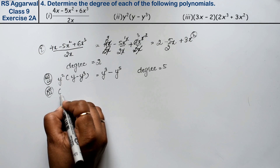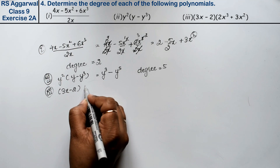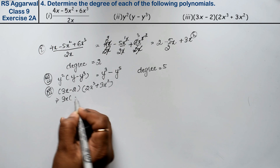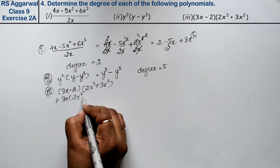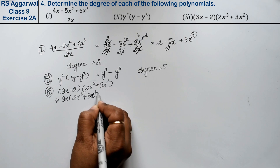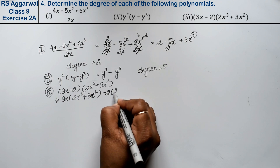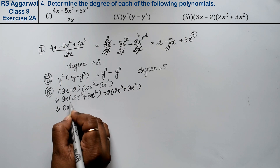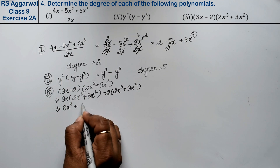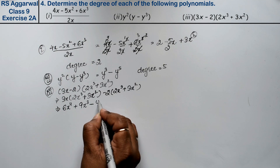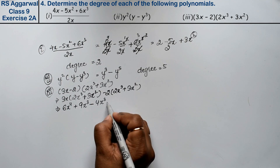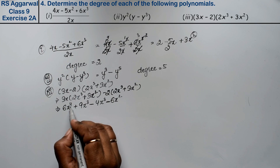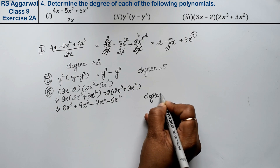Let's do the third part. Third part is (3x minus 2) into (2x cubed plus 3x squared). Expanding: 3x times 2x cubed gives 6x to the 4th, plus 3x times 3x squared gives 9x cubed, minus 2 times 2x cubed gives minus 4x cubed, minus 2 times 3x squared gives minus 6x squared. The highest degree term is 4, so degree is 4.